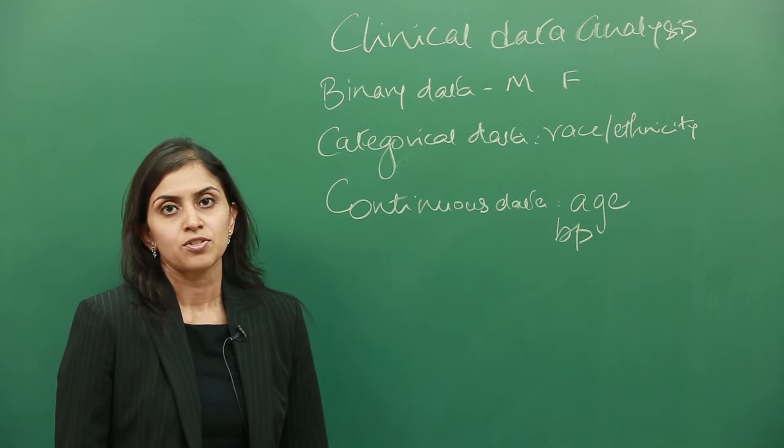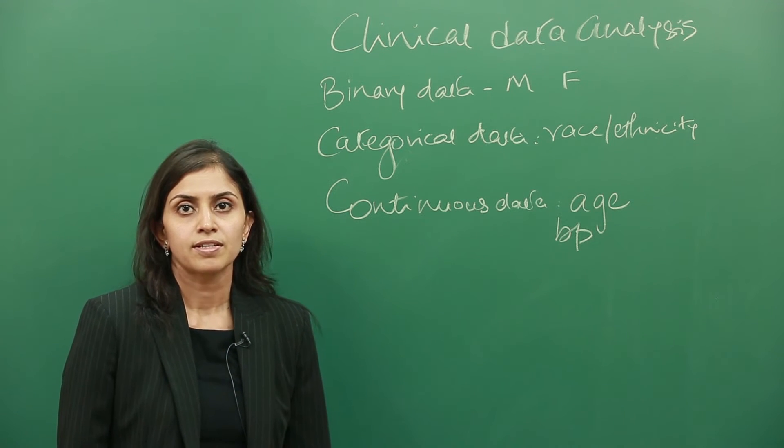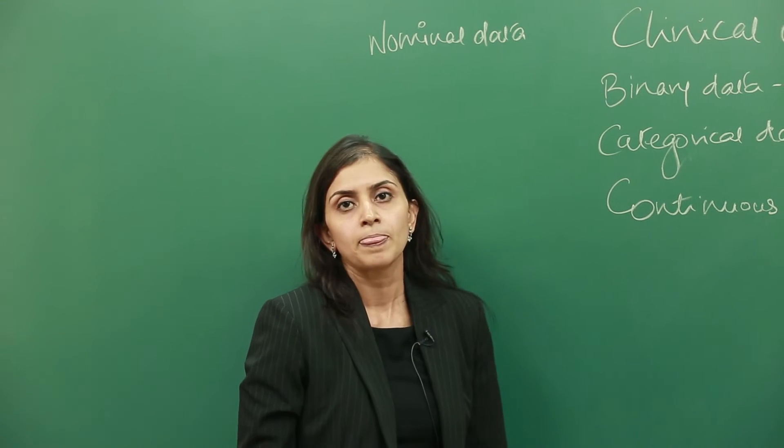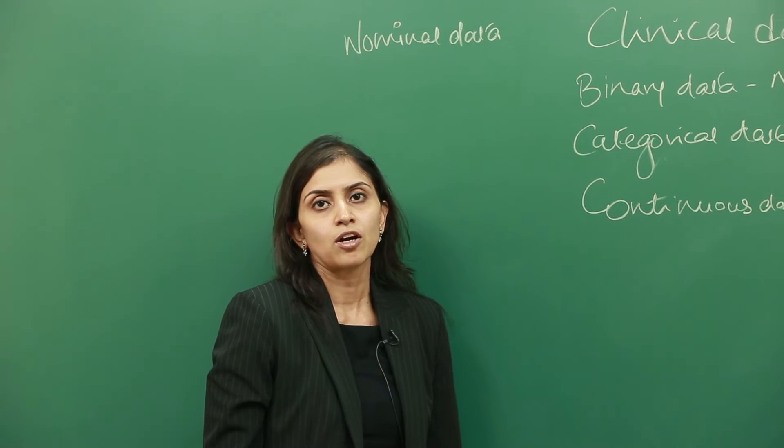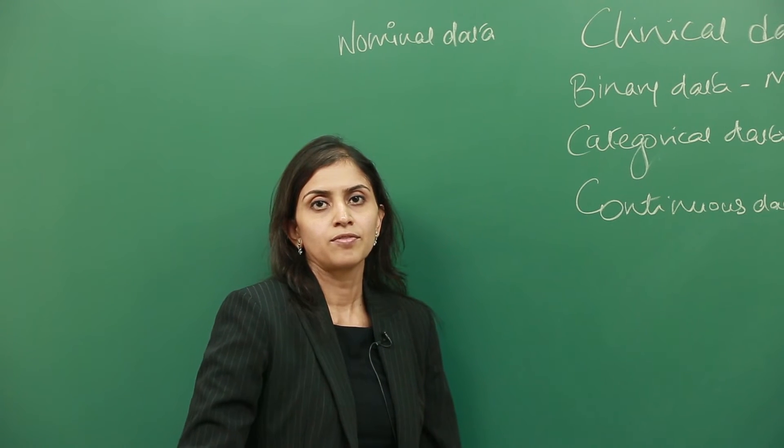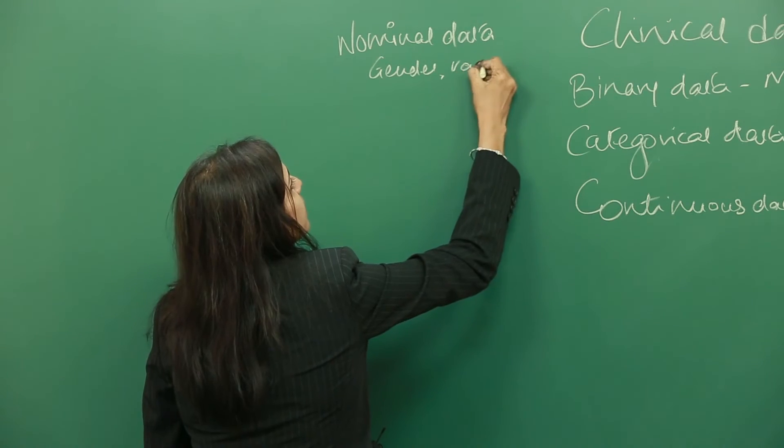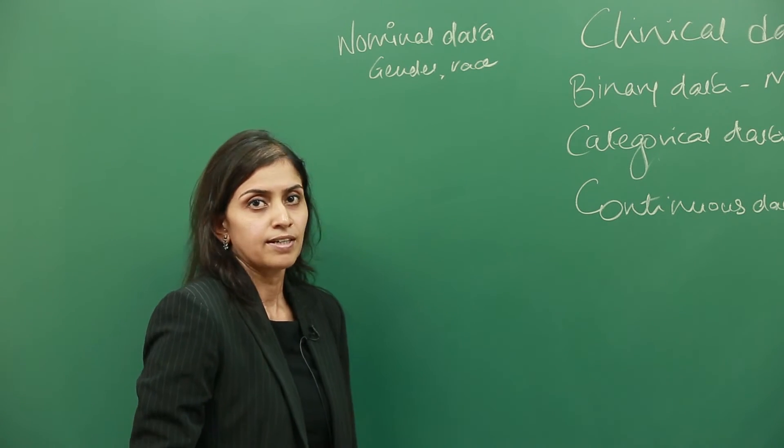There are different kinds of categorical data, or there is another way to look at the data categories. There's nominal data. Nominal data is something that cannot be ordered, or it doesn't have any sort of rank ordering system to it. Gender and race are all examples of nominal data.